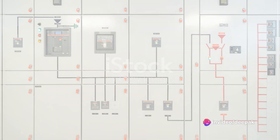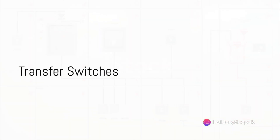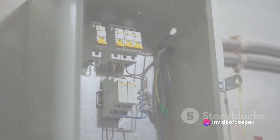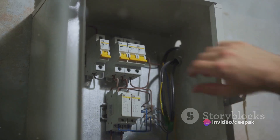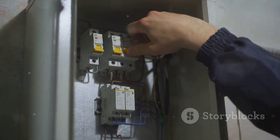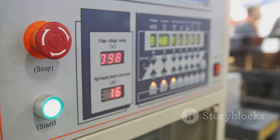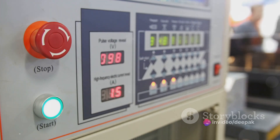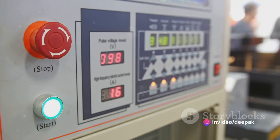Our third type, the transfer switches, are used in buildings that have an alternative power source, like a generator. This type of control panel switches the power source from the main power supply to the generator when there's a power outage.